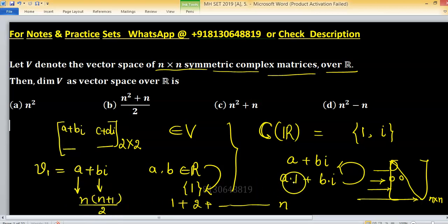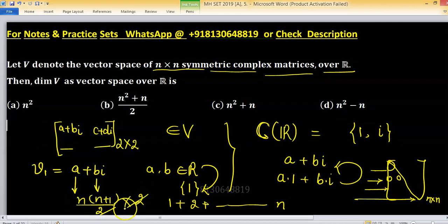But to write each entry, we are independent at two choices. So at how many choices we are independent? So 2 cancel out by 2 and this expression gives you n squared plus n. So option c will be the right key for this problem.